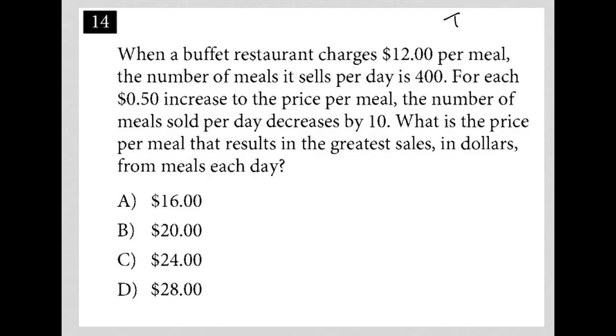This question looks like it's going to be a translate word problem question. Let's read it one sentence at a time and make sure we understand all of the quantitative information. The first sentence says, when a buffet restaurant charges $12 per meal, that's important. The number of meals it sells per day is 400. So $12 goes along with 400 meals.